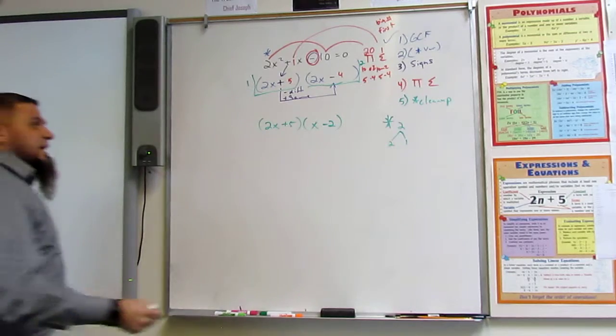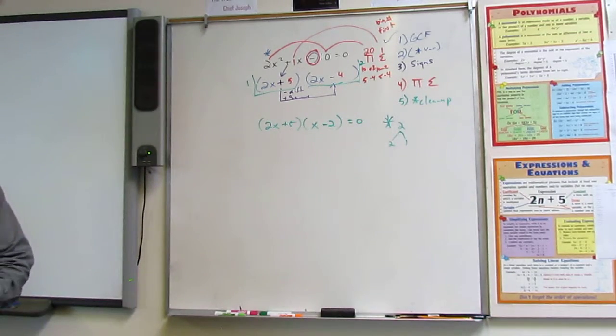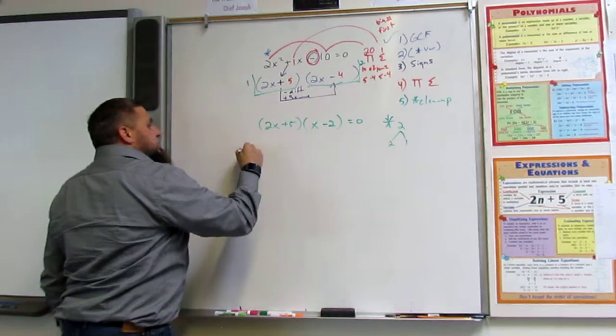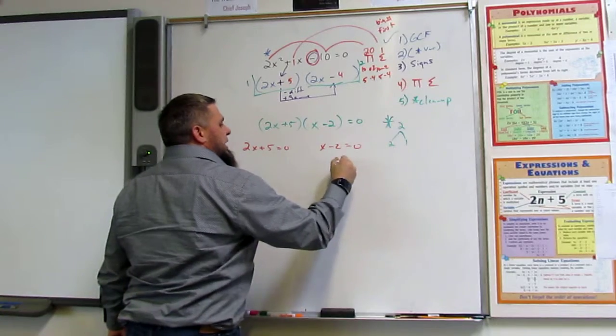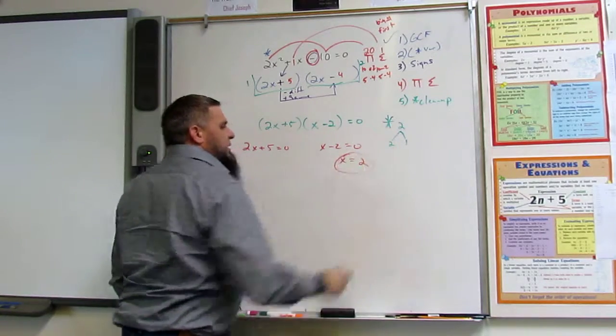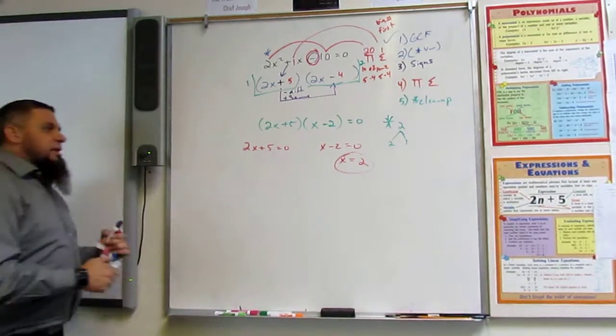So now, that's it. We set that equal to 0 and solve. All that means is 2x plus 5 equals 0 and x minus 2 equals 0. So x equals 2. Okay? I know that. That one was easy. Right?